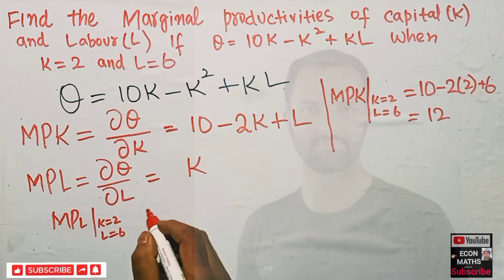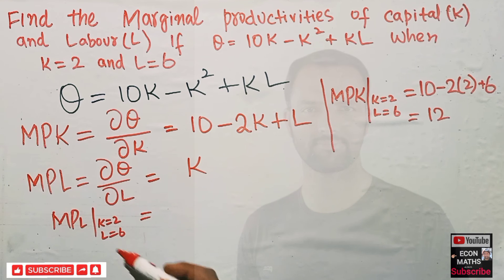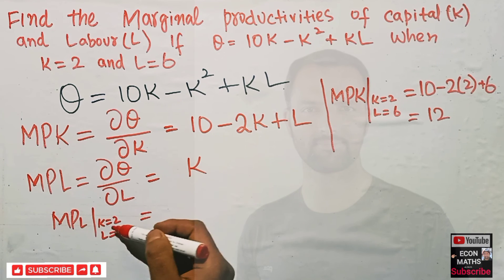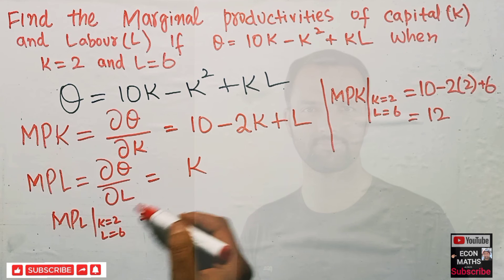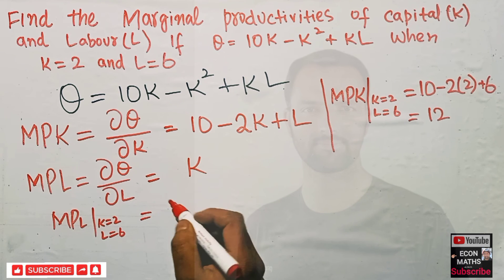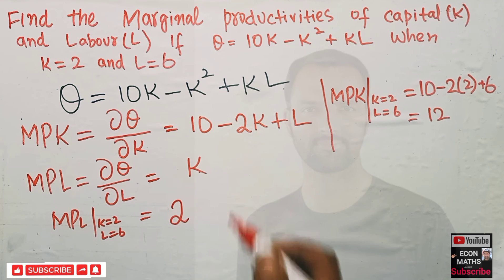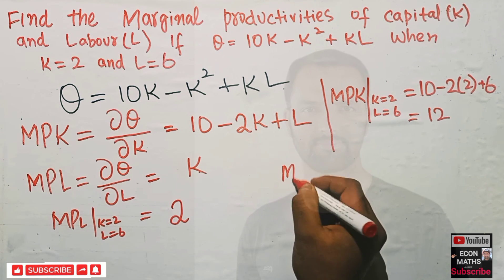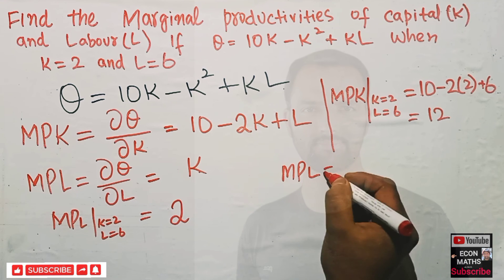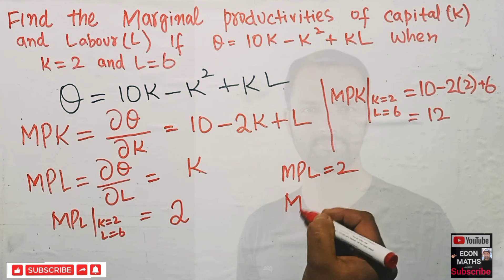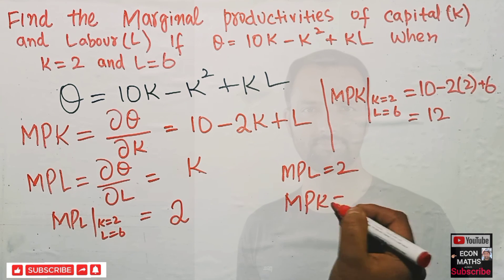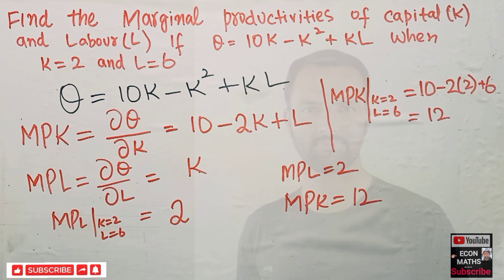When K = 2 and L = 6, since no L is involved in MPL = K, we just plug in K = 2. So MPL = 2. To summarize: the marginal productivity of labor is 2 and the marginal productivity of capital is 12. I hope this video was clear — if you like it, please share and subscribe with your econ friends. Thank you.